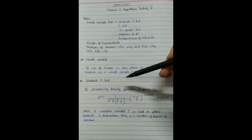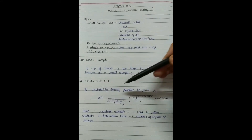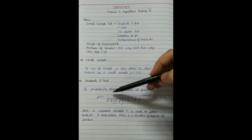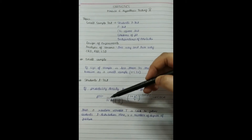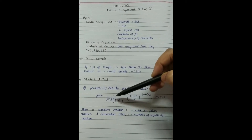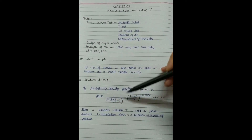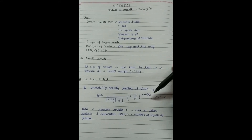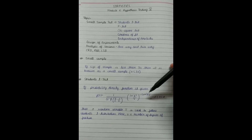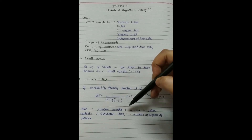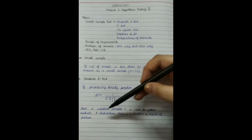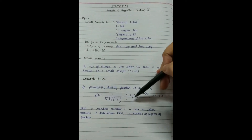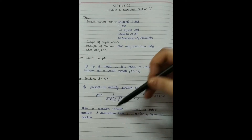In the Student's t-test, if the probability density function is given by the formula f(t) = 1 / (√v · β(v/2, 1/2)) · (1 + t²/v)^(−(v+1)/2), where v stands for the degree of freedom, then the variable t is said to follow the Student's t-distribution. Here, v is the number of degrees of freedom.